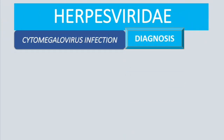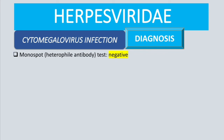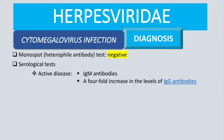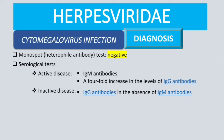For diagnosis, the heterophile antibody (mono spot) test will be negative in CMV, as those heterophile antibodies are produced by cells infected by EBV, not CMV. For serology: in active disease, we detect CMV IgM antibodies or a fourfold increase in IgM levels. In inactive disease, we detect IgG antibodies in the absence of IgM antibodies.